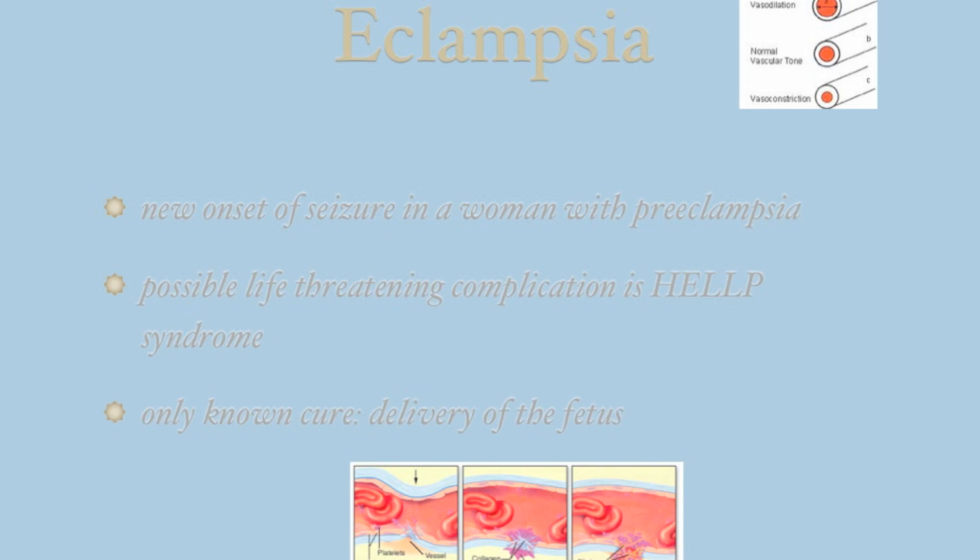The newer classifications are more distinct, and this helps physicians and nurses categorize the risk and manage the patient. A woman can progress from gestational hypertension to preeclampsia and eclampsia, so you always need to be prepared and monitor for this change in status.